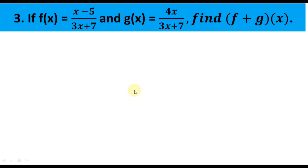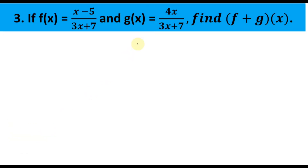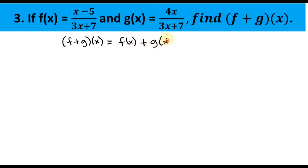Number 3: if f(x) = (x − 5) / (3x + 7) and g(x) = 4x / (3x + 7), find the sum of the given functions. Using the formula: (f + g)(x) = f(x) + g(x). Substitute the value of f(x).